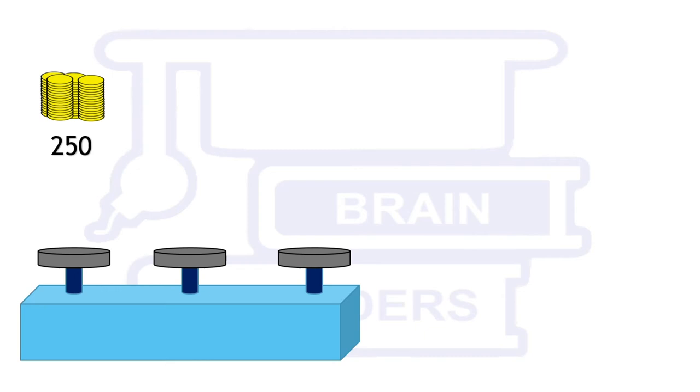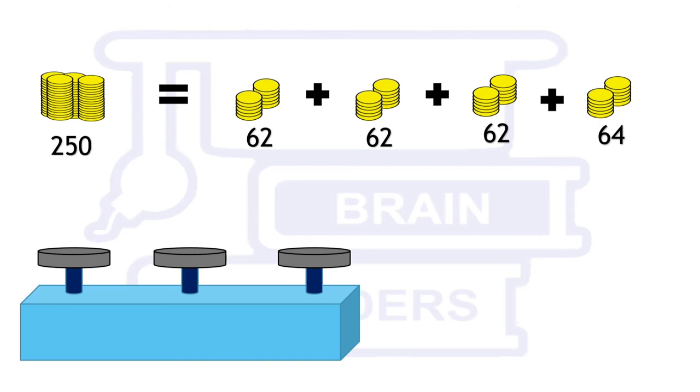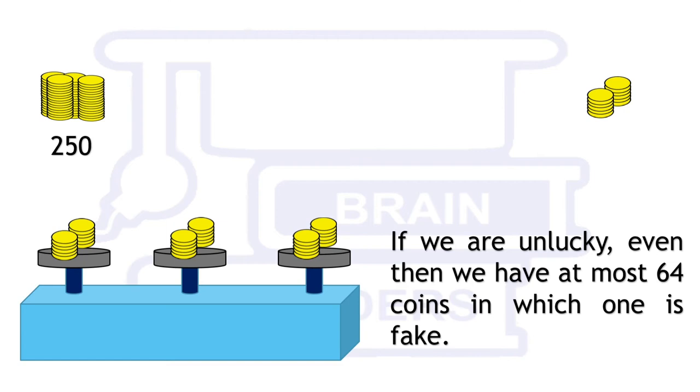Again we have to do the same thing but this time coins cannot be divided into four equal groups because 250 leaves two as a remainder when divided by four. So we have three groups of 62 coins and one group of 64 coins. Put the three equal groups of coins on the weighing balance. If any one of them is heavier than others then it contains the fake coin, otherwise fourth group has the fake coin.